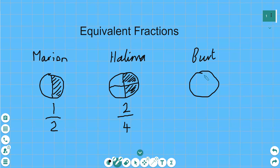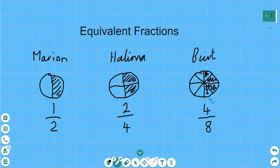Now Bert absolutely loves chopping pizza. So he not only chops into quarters, but he chops it into eight slices — into eighths. So on his fraction, we put eight in the denominator position. Bert eats four of his slices, so we put four in the numerator position. And a trick question is: who's eaten the most pizza? Neither of them have, because they've all eaten exactly the same amount of pizza. They've eaten different numbers of slices, but they've eaten the same amount of pizza.